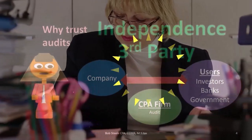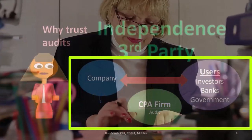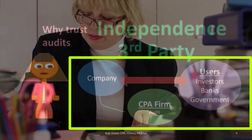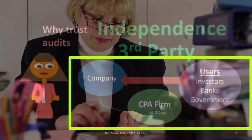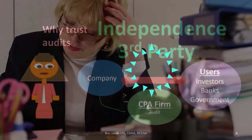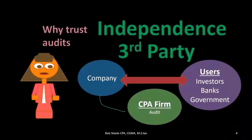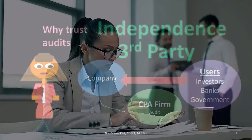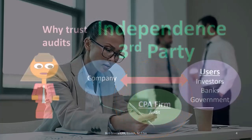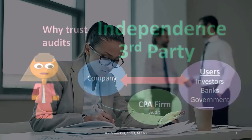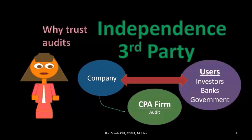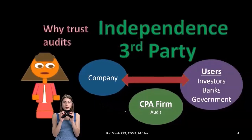Independence becomes a huge thing. You might be thinking, well, how does the CPA firm get paid by the company? That's right — and that's why independence becomes so important. We need regulations and standards to regulate the CPA firm profession in order to remain independent. If the people doing the audit were also part of the board of directors or management of the company, then clearly they would not be independent. We want to be independent both in appearance and in actuality so that we can be someone that both parties can rely on in this transaction.